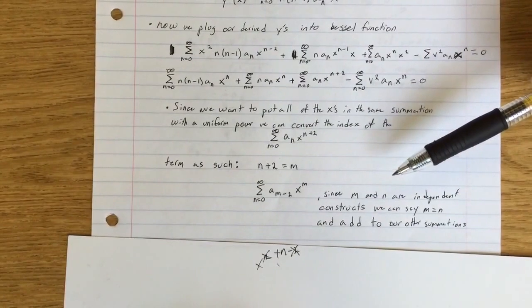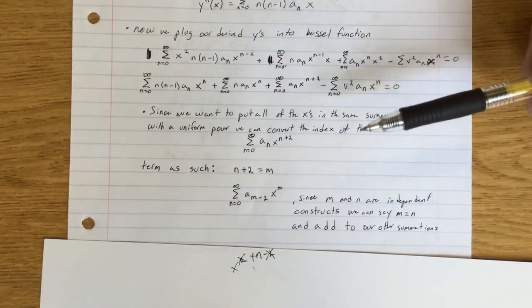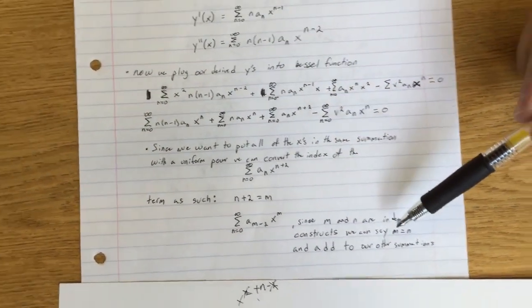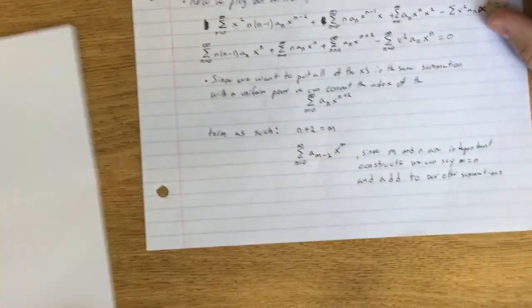So since m and n are just independent of each other, and it's just something arbitrary that we have assigned to it, we can actually just say m is n, and then we can add this to our other forms.